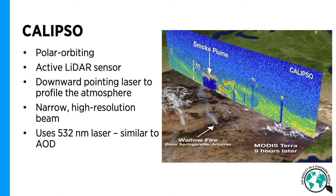An example is the Wallow Fire in Arizona, United States, as shown in the example on the left. Of course, the downside is that with only one narrow beam, it only gets narrow coverage. CALIPSO uses a 532 nanometer laser, which is very close to the wavelength used in AOD. This makes it easy to compare to AOD measurements, but with a single spectral band, its uses are more limited than a multispectral passive sensor.